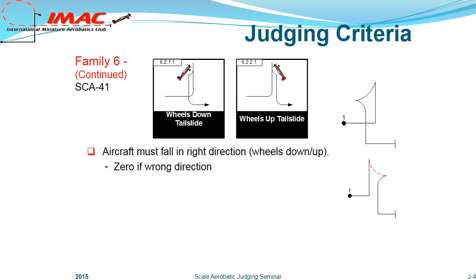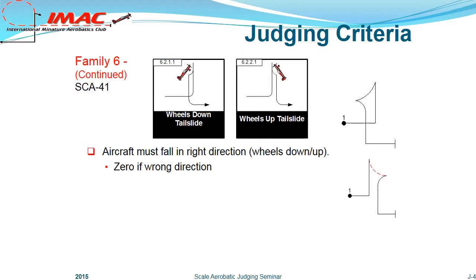Concentrating on the slide portion of the maneuver: the aircraft must fall in the correct direction — wheels down or wheels up. Close attention is needed to the direction of the slide, since all other aspects of the figure will appear the same even if the wrong type of slide is performed. A slide in the wrong direction must be zeroed.